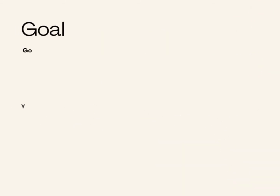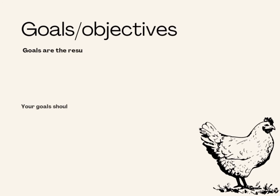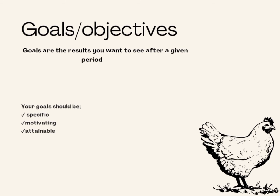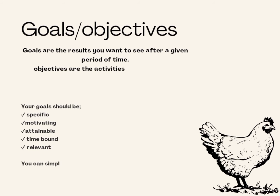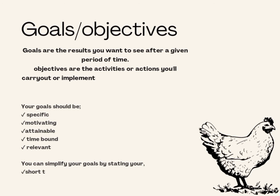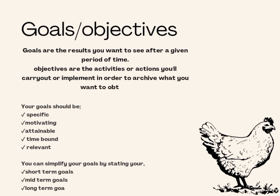For example, Joy Poultry Farm's vision will be to produce quality organic chicken. The goals or objectives: goals are the results you want to see after a given period of time, and the objectives are the activities or actions you will carry out in order to achieve those results. Your goals should be specific, motivating, attainable, time-bound, and relevant.